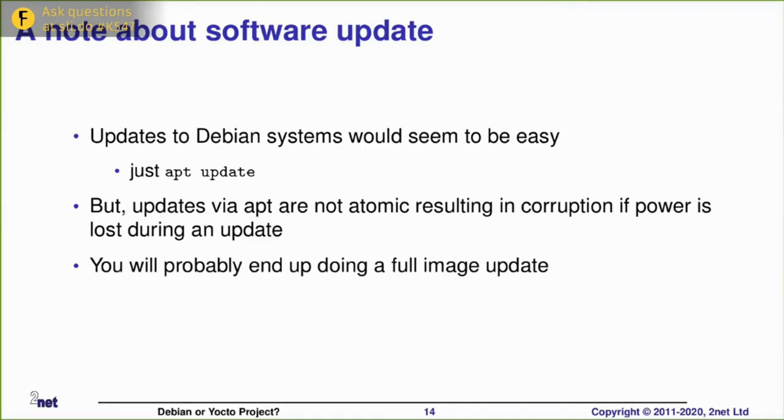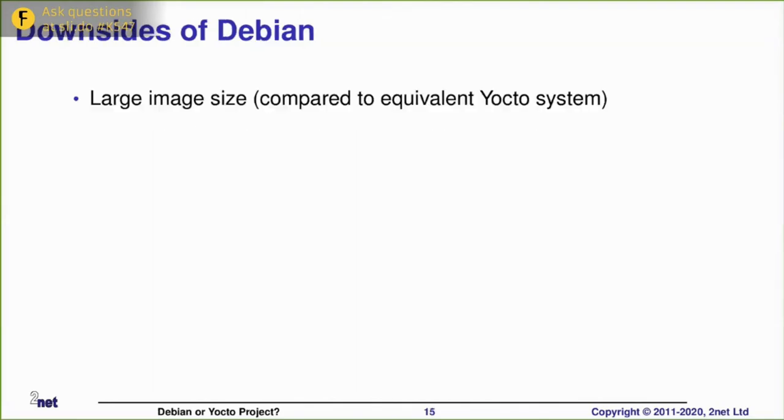If, for example, you lose power or the system resets halfway through an update, there's a good chance you'll end up with a corrupted system which will either not boot or boot and not run the app anymore. There are many solutions to this. You can do a full image update exactly as you would do with the Yocto project as we're going to come on to in a few minutes. You can also do some clever things with containers and flat packs and snappies and all that kind of stuff. However, I just want to point out that if you're using Debian, a package update is probably not what you're going to be wanting.